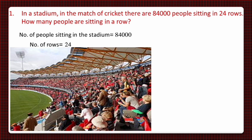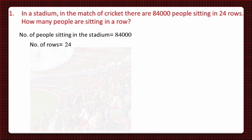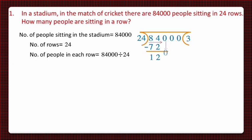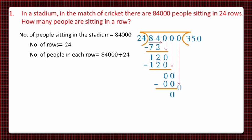We need to find the number of people in each row, so we'll divide 84,000 by 24. We'll use the formal method of division, bringing down digits from the dividend one by one and reading the table of 24 to choose the value less than or equal to each new number formed. On solving, we get the final remainder as zero and the quotient is 3,500.